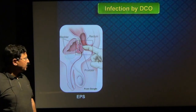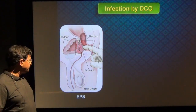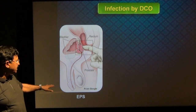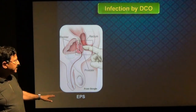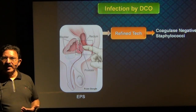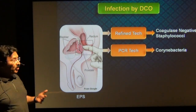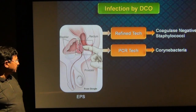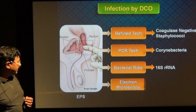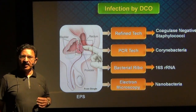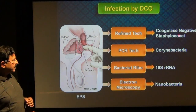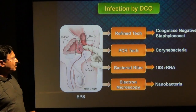Regarding infection by difficult-to-culture organisms (DCOs) — how have we known about them? When we did expressed prostatic secretion (EPS) studies using refined culture technologies, we found coagulase-negative staphylococci in some prostates. When we used PCR technique, we found Corynebacterium in some prostates. When we studied bacterial ribosomes, we found 16S rRNA, and recently when studies on EPS were done using electron microscopy, we found nanobacteria in some of these prostates. Friends, if you look at these four types of organisms, you cannot culture them with routine methods — that is why they are called DCOs.